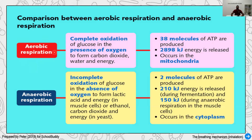Aerobic respiration is the process where oxygen needs to be present. When oxygen is present, aerobic respiration can take place, and in this case a high amount of energy is produced — about 38 ATP molecules. Anaerobic respiration happens only in the mitochondria, which is the powerhouse of the cell.